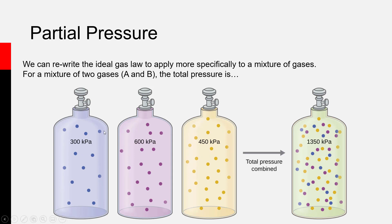If we took our 22 liters of blue gas, our 22 liters of purple gas, and our 22 liters of yellow gas, and put them all in a single 22-liter container, the pressure of the mixture would be the sum of the partial pressures of each gas. So the pressure of the mixture would be 1350 kilopascals: 300 (blue) plus 600 (purple) plus 450 (yellow) equals 1350 kilopascals.